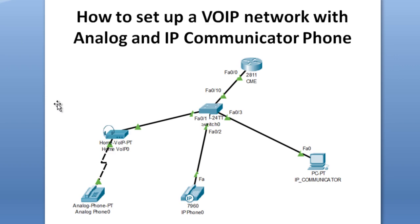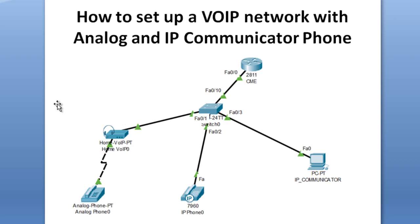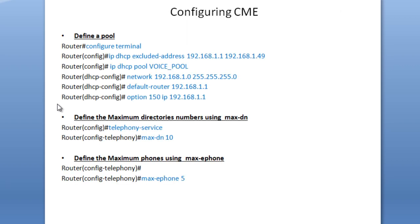As you see in the diagram, the analog phone cannot use Voice over IP without what we call a Home Voice over IP adapter. This adapter translates the signal because the analog phone doesn't understand digital communication, so it's going to use the Home Voice over IP in order to talk to the Voice over IP network.